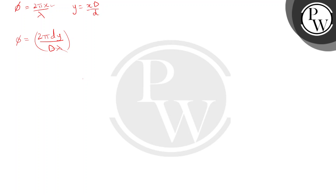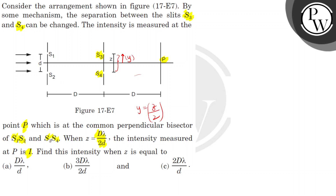Substituting y = Z/2 into the phase difference equation, we get φ equals π·D·Z divided by D·λ. Now, once we have this, we can find the intensity at point P. This intensity is proportional to the amplitude of the wave arriving at P. There is a wave coming from S3 and a ray coming from S4, and they merge at point P to give some intensity.